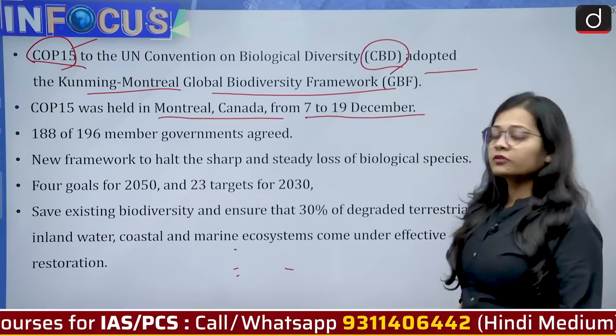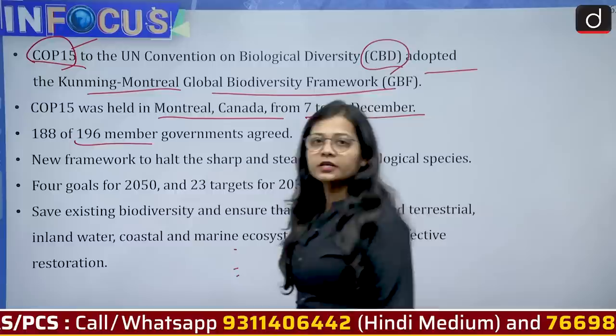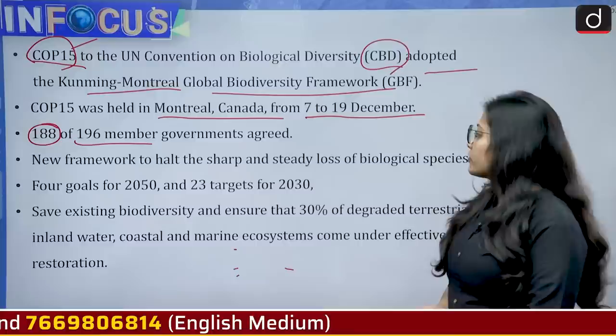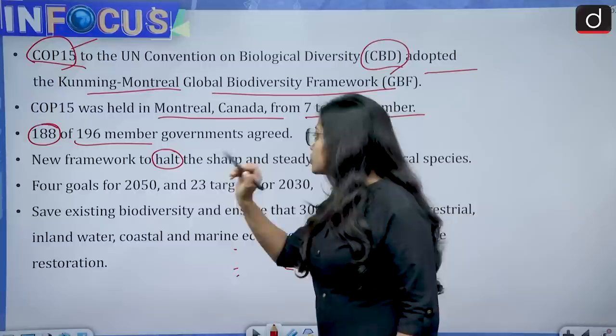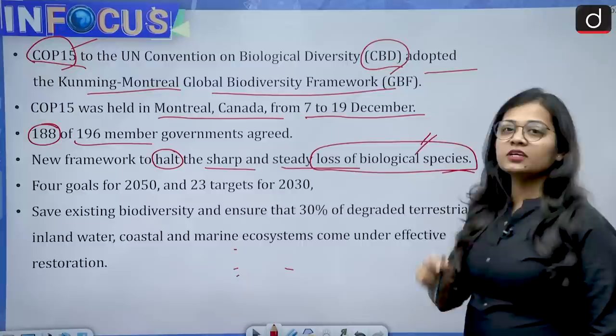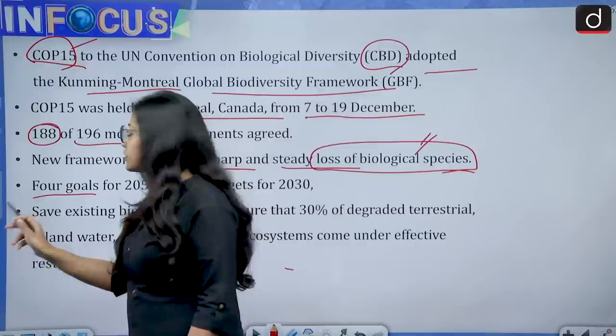COP 15 was held in Montreal, Canada from 7th to 19th December. In total, 196 members are part of the CBD and out of these, 188 members — the majority — have agreed on the new Global Biodiversity Framework. The aim of this framework is to halt and stop the sharp and steady loss of biological species.